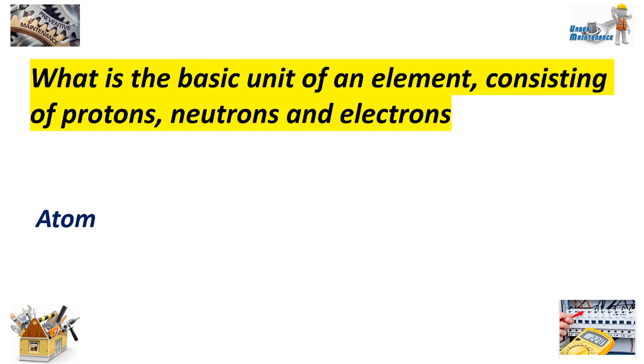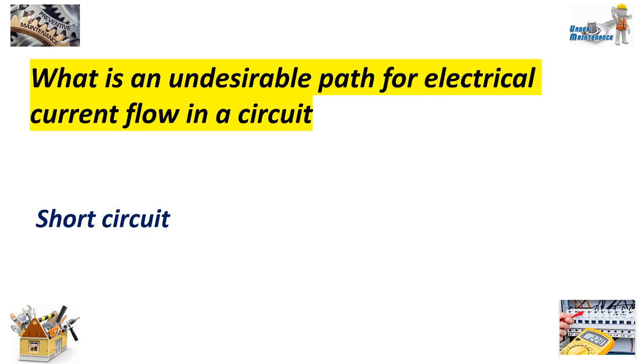What is the basic unit of an element consisting of proton, neutron, and electrons? Answer: Atom. What is an undesirable path of electrical current flow in a circuit? Answer: Short circuit.